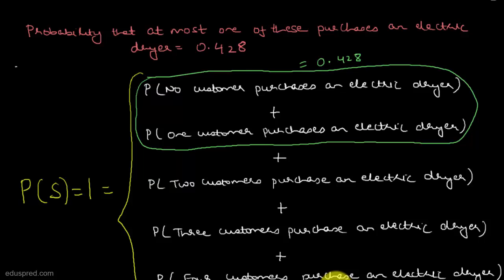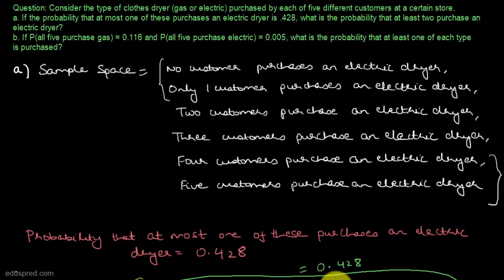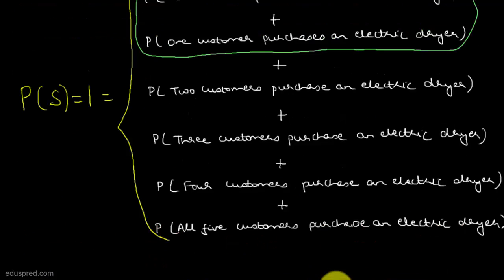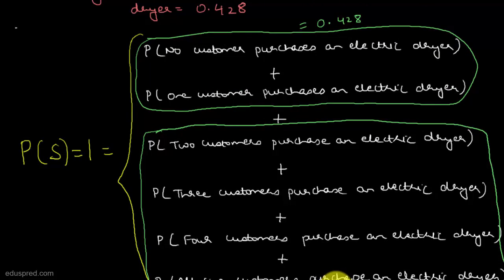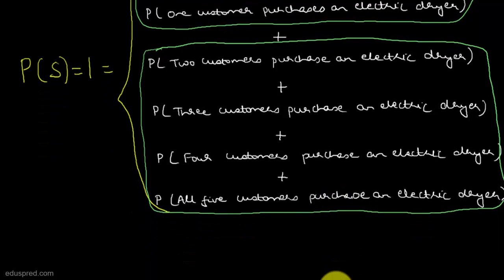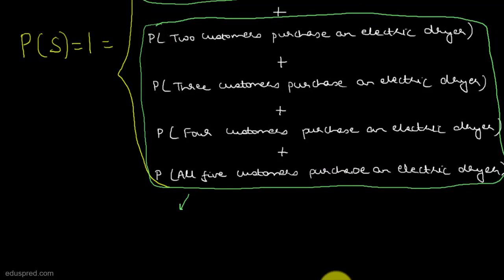We have to find the probability that at least two purchase an electric dryer — that is, the sum of the remaining four events' probabilities. This is very straightforward: we know the total is one and the complement is 0.428, so the required probability is equal to one minus 0.428, which equals 0.572. This is all for part A.